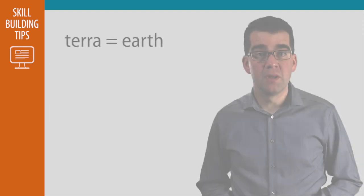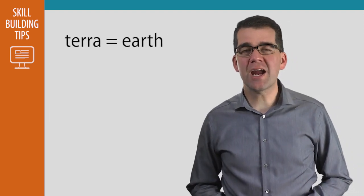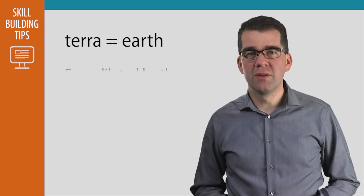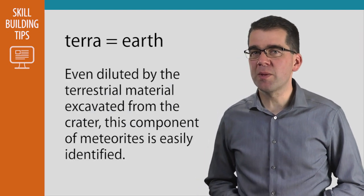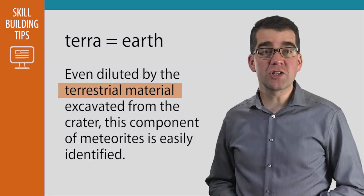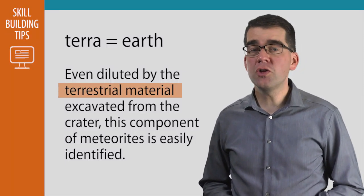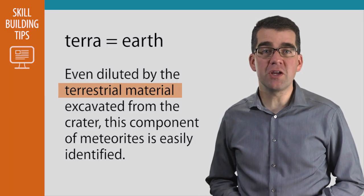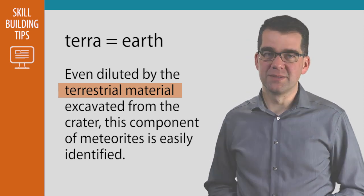For example, if you know that the Latin root 'terra' means earth, then when you see this sentence from the passage that talks about the terrestrial material found at the impact site, you'll know that it's referring to the material from the earth, not from the meteorite.